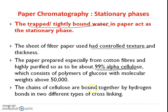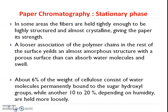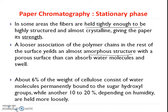The chains of cellulose are bound together by hydrogen bonds in two different types of cross-linkings. In some areas the fibers are held tightly enough to be structured and almost crystalline, giving the paper strength. A looser association of polymer chains in the rest of the surface yields an almost amorphous structure with a porous surface that can absorb water molecules. About 6% of the weight of cellulose consists of water molecules permanently bound to the sugar hydroxy groups, while 10–20% depending upon humidity are held more loosely.